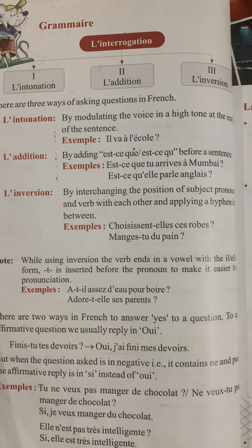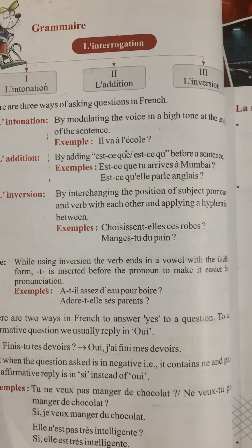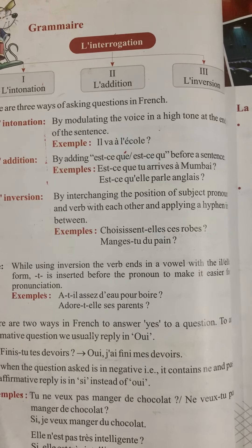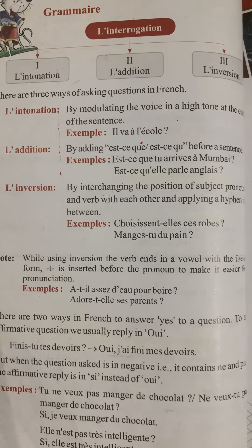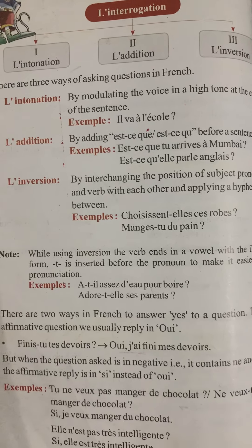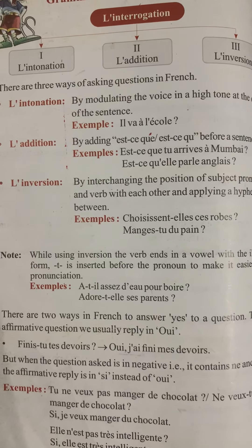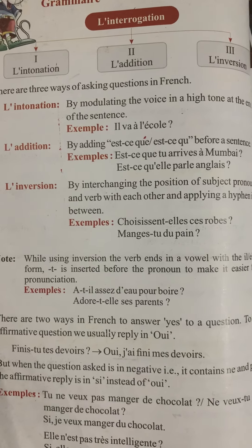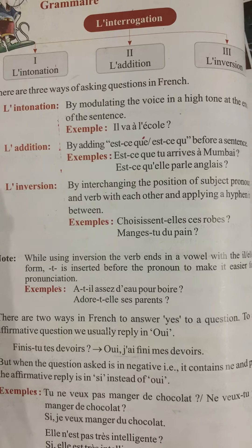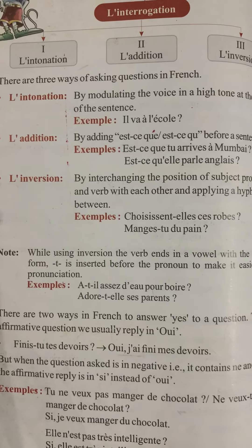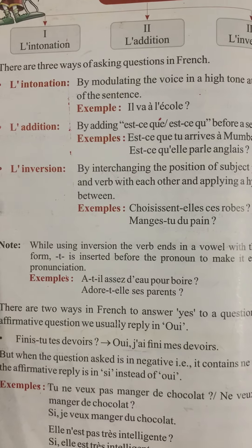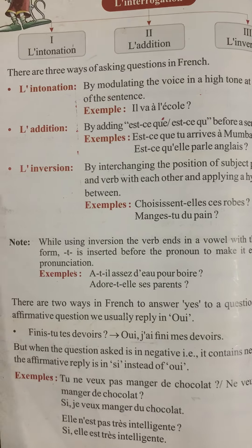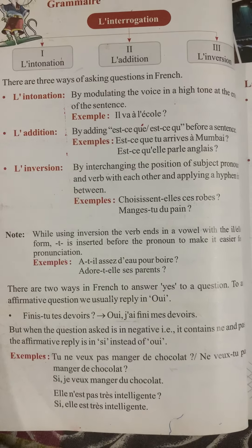There is one exception in inversion: when the verb ends in a vowel and is used with the il/elle form, a '-t-' with hyphens on both sides is inserted before the pronoun to make pronunciation easier. For example, 'a-t-il' — 'a' ends in a vowel and 'il' starts with a vowel; two vowels can never be together, so we insert '-t-'. Similarly, 'adore-t-elle' — 'adore' ends in 'e' and 'elle' starts with 'e', so we insert '-t-'. This is an exception we must take care of.